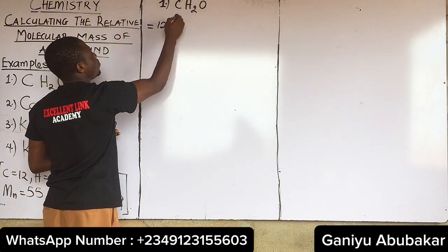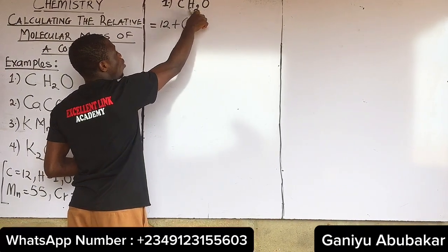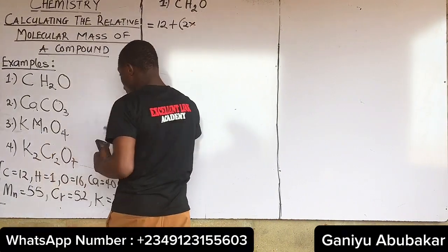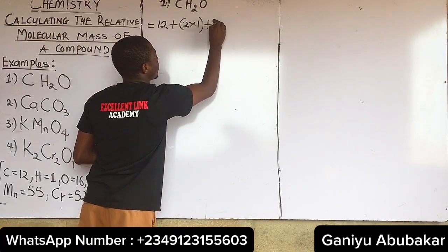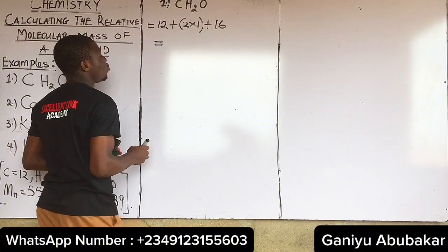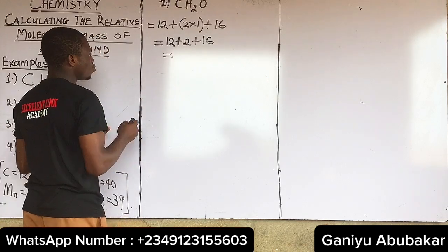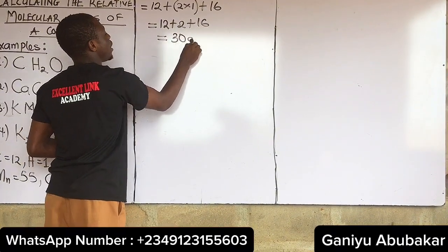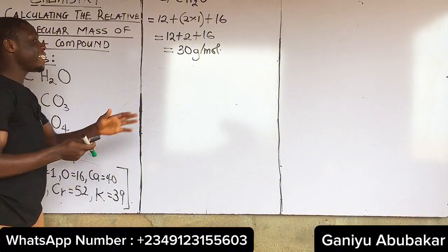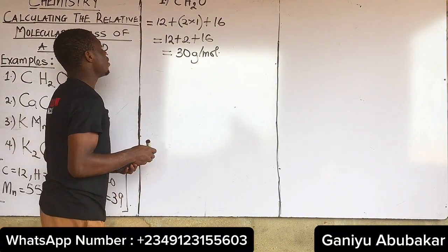For hydrogen, there are two hydrogen atoms and the atomic mass of hydrogen is 1, so that gives 2. Plus the mass of oxygen is 16. Simplifying: 12 + (2 × 1) + 16 = 12 + 2 + 16 = 30 gram per mole. Gram per mole is the SI unit for relative molecular mass. So the relative molecular mass of CH₂O is 30 g/mol.